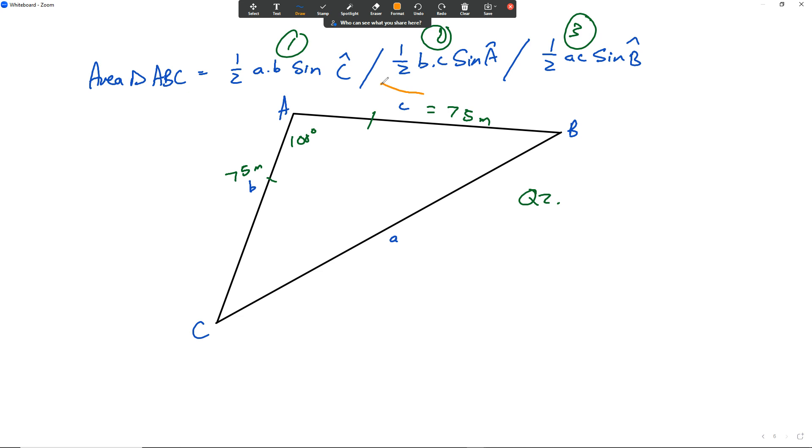We are going to choose this formula over here. Because for this formula, we have A, B, and C. And notice that the angle is always in between the two. So we're going to go area of triangle ABC is equal to half B times C, 75 times 75, sine of the angle, sine 100.